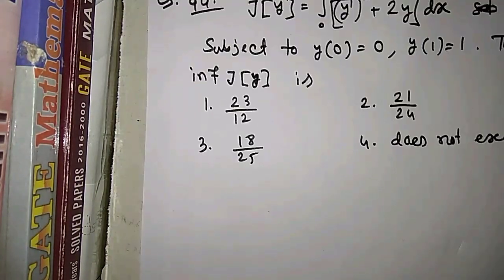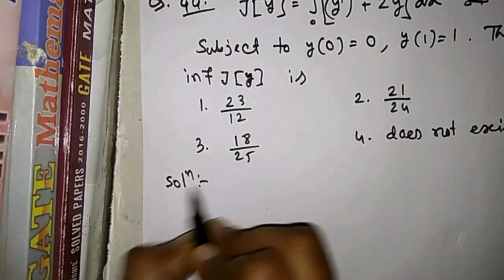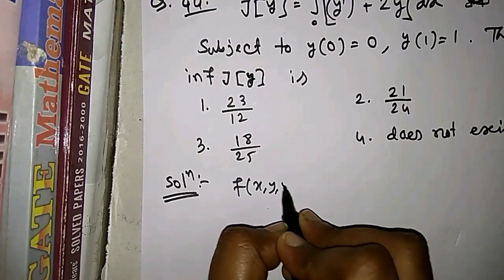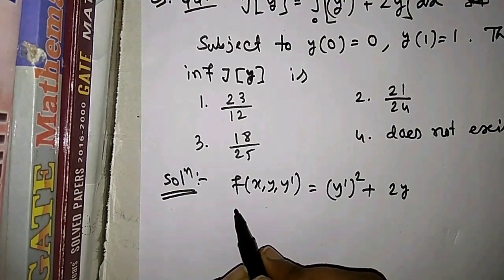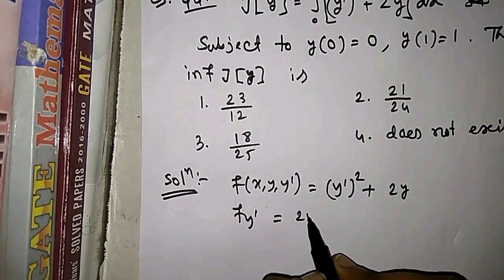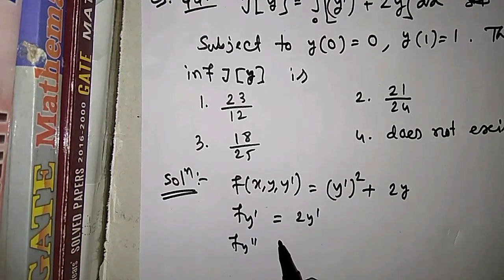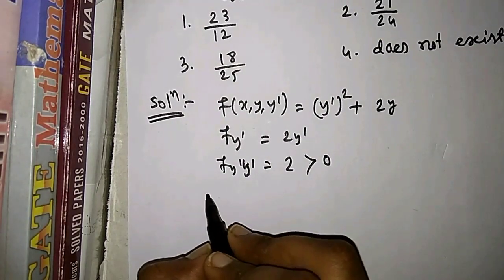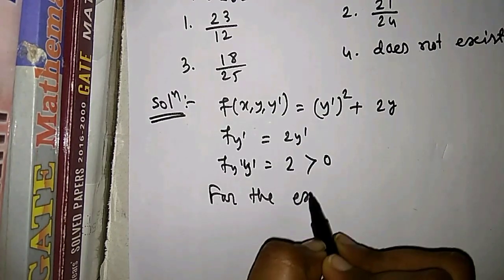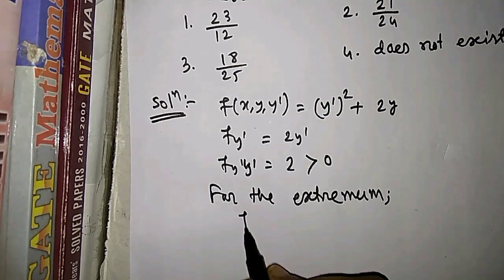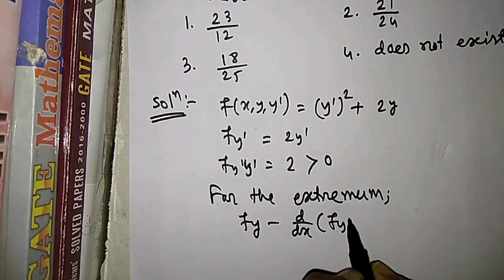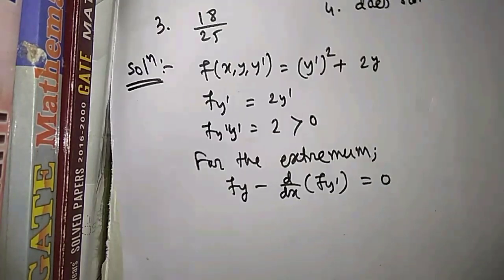Let's come to the solution. Here f(x, y, y') equals y' squared plus 2y. The partial derivative f with respect to y' is 2y', and the second derivative with respect to y' is 2, which is greater than 0. For the extremum we have the Euler-Lagrange equation: f_y minus d/dx of f_{y'} equals 0.